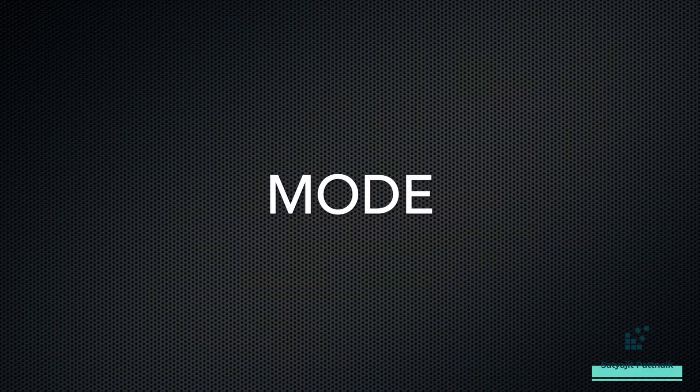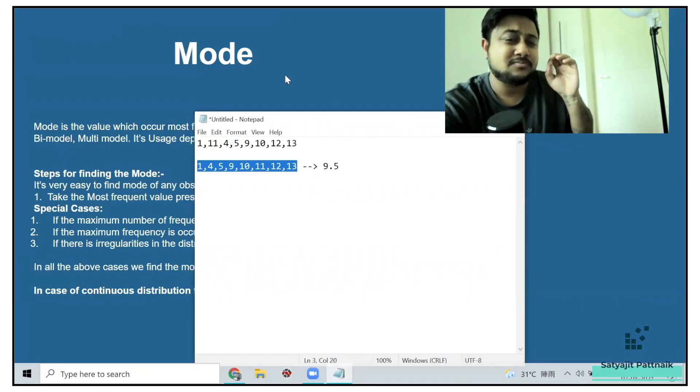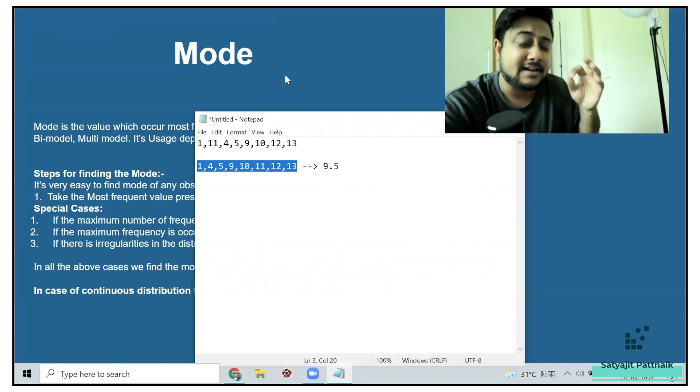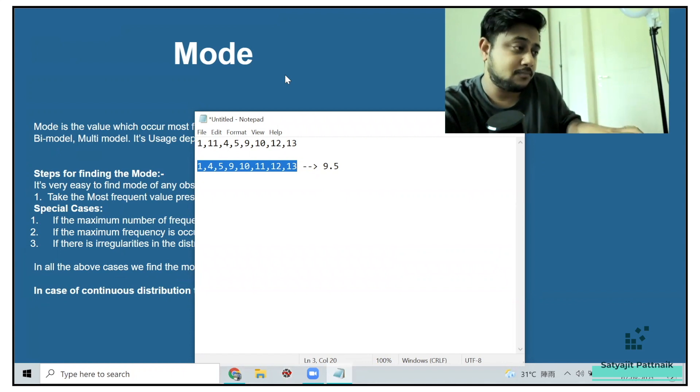Now, what is mode? Mode is something which is mostly used in categorical variables. For numerical variables, we can use mean, we can use median.